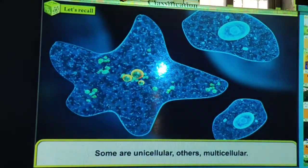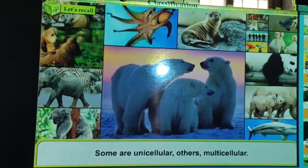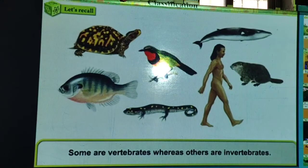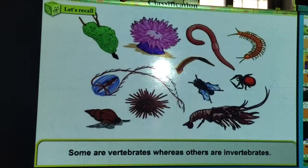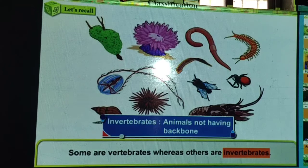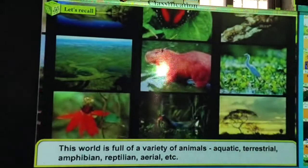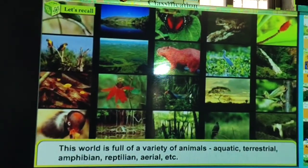Some animals are unicellular, others are multicellular. Some are vertebrates whereas others are invertebrates — vertebrates have a backbone, invertebrates do not. This world is full of a variety of animals.